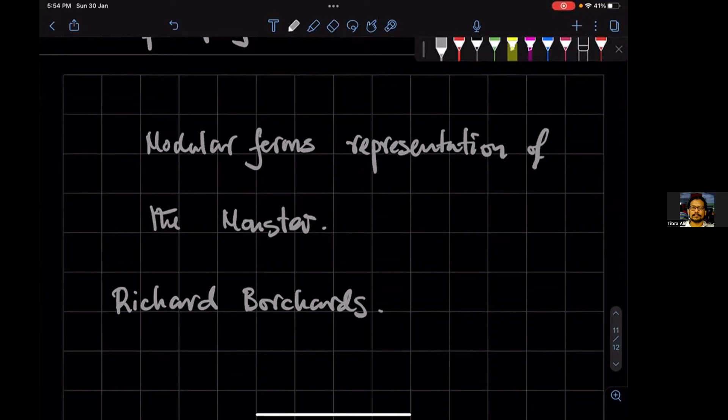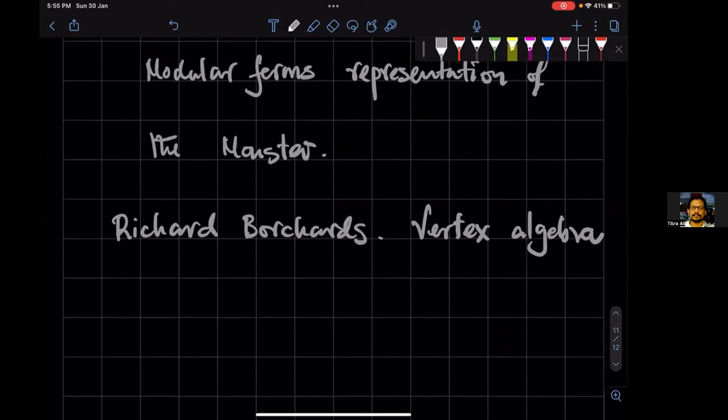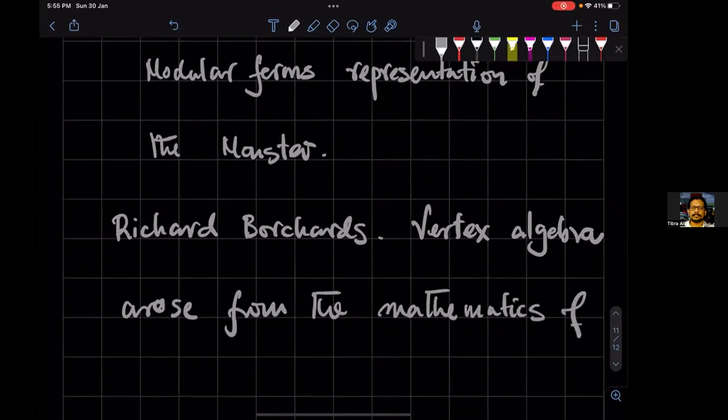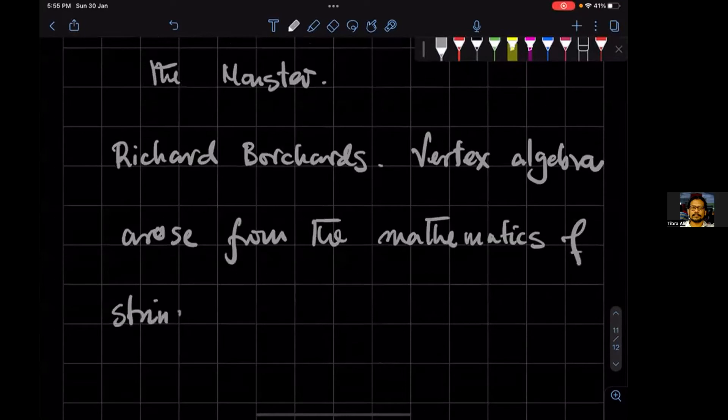And Richard Borcherds used something called vertex algebra. A vertex algebra is very closely related to something called the kind of groups used in string theory called loop groups. So vertex algebra arose from the mathematics of string theory.